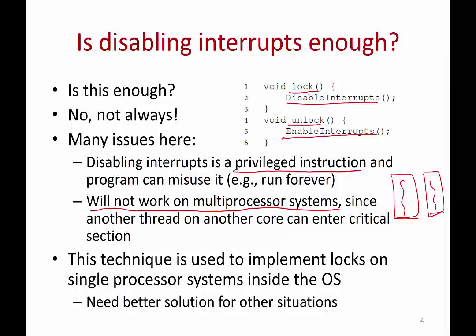So the idea of disabling interrupts to lock and re-enabling them to unlock is useful only in a limited setting — for example, in single-processor operating systems, inside the OS, inside trusted code. But in user programs or multi-processor systems, we need other solutions. Disabling and enabling interrupts was a primitive way of locking back when all code could be trusted and you only had a single processor.